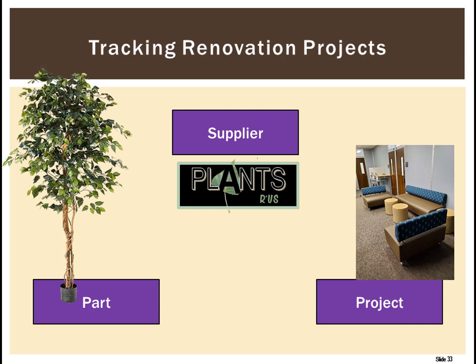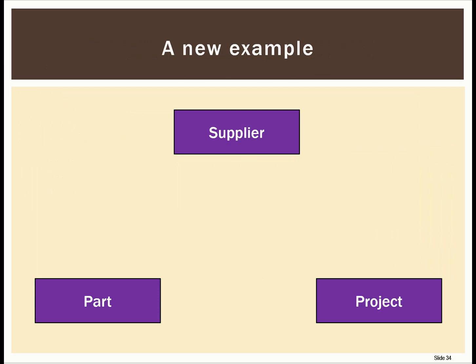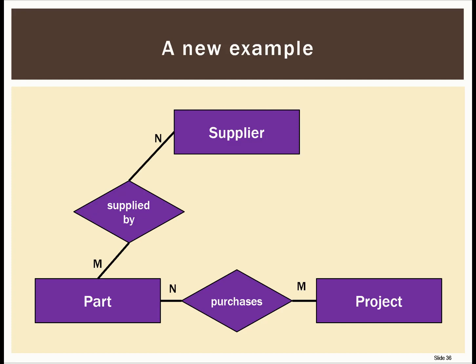We have a project entity, a parts entity, and a supplier entity, and we're going to use these to build our ER diagram. Looking at the entity types project, part, and supplier: a project can purchase many parts, but a part could also be purchased by many different projects — we could reuse ficus trees in many renovation projects. There's also a many-to-many relationship between part and supplier, since a part can be supplied by multiple suppliers, and a supplier can supply many parts.